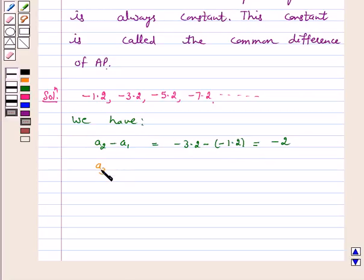a₃ minus a₂ is equal to minus 5.2 minus minus 3.2, which is equal to minus 2.